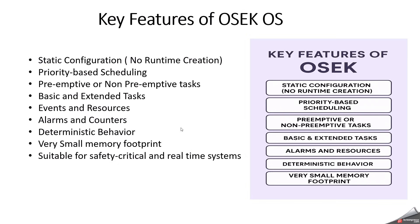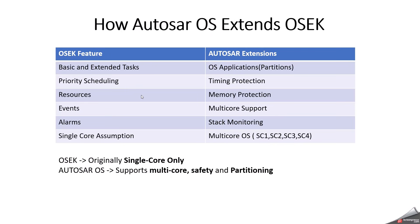That's why OSEK is ideal for safety-critical control ECUs. Autosar OS extends OSEK with several additions. OSEK is originally designed for single core, but Autosar OS has to support multi-core, safety, and partitioning. Basic and extended tasks from OSEK are extended with OS applications and partition concepts to fulfill Autosar requirements. OSEK's priority-based scheduling is extended with timing protection, and resources are extended with memory protection because of multi-partition, ASIL, and QM requirements.